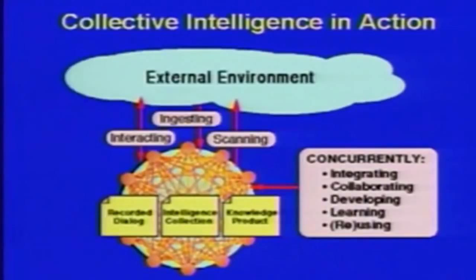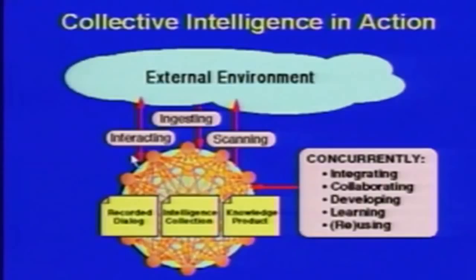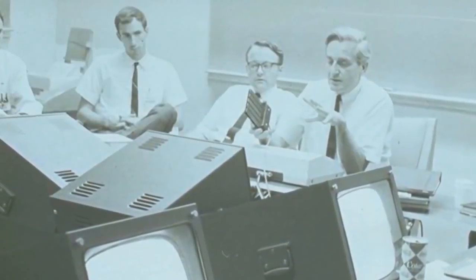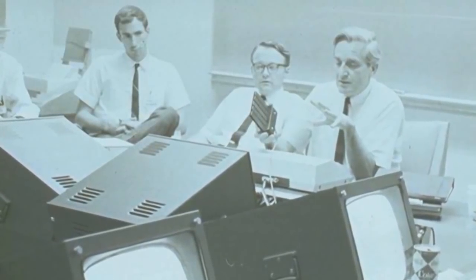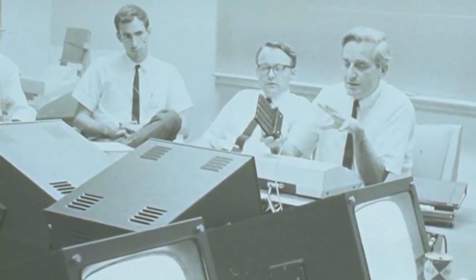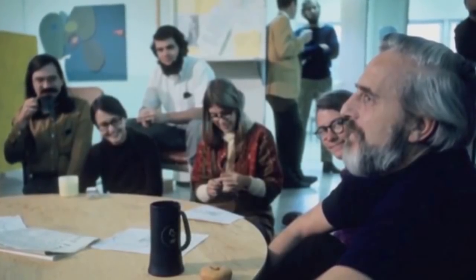Most of Engelbart's ideas for improving how organizations function — and thus raising their collective IQ — also got left behind. Engelbart explained: 'One of the big things we talk about is the kind of collective intelligence. If you look at something like a social organism — an organization — and drew an envelope around it and watched how it interacts with the outside world, you'd soon get a sense of what kind of IQ it has. How well does it understand what's going on? How quickly and subtly does it make decisions?'